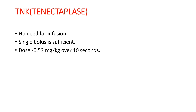The next agent is tenecteplase. Its advantage is that no infusion is needed — a single bolus is sufficient. The dose is 0.53 mg per kg over a 10-second bolus. A helpful memory aid: the dose in mg is roughly half the patient's body weight in kg. For example, a 60 kg patient requires 30 mg. It is costlier than other agents, but the single bolus is a key advantage.